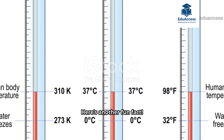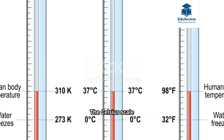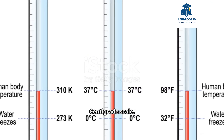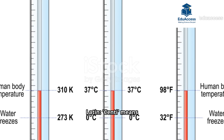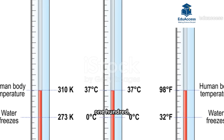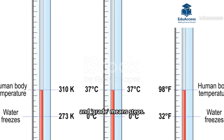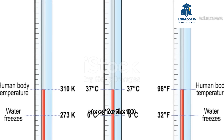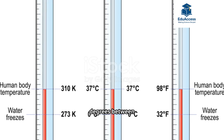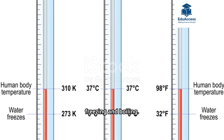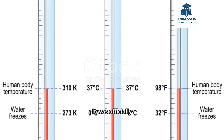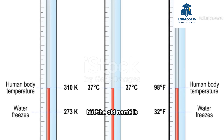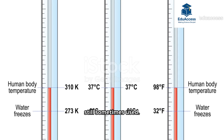Here's another fun fact: the Celsius scale was originally called the Centigrade scale. The name comes from Latin — 'centi' means 100 and 'grade' means steps. So 'centigrade' literally means 100 steps, for the 100 degrees between freezing and boiling. In 1948 it was officially renamed to honor its inventor, but the old name is still sometimes used.